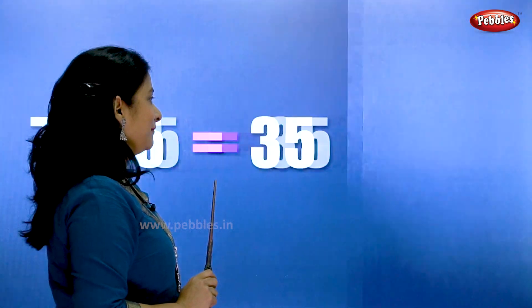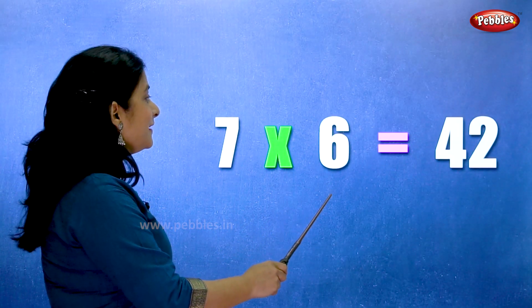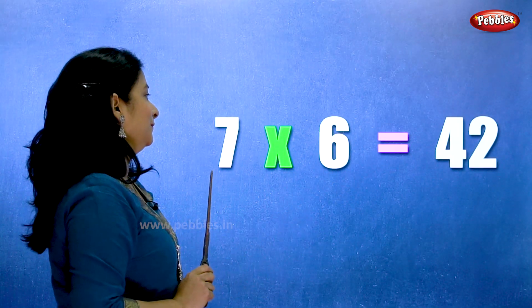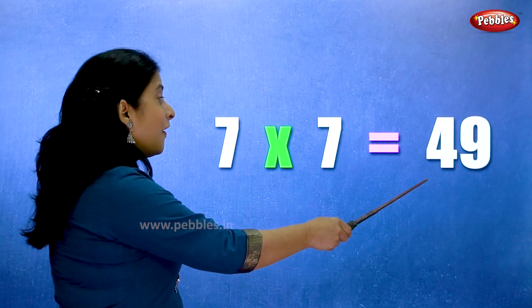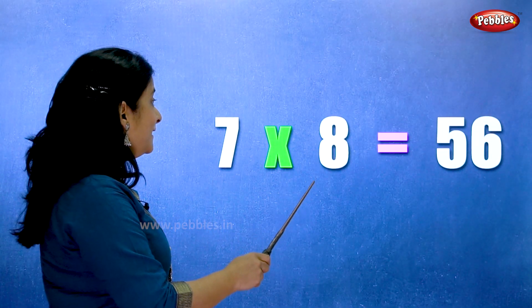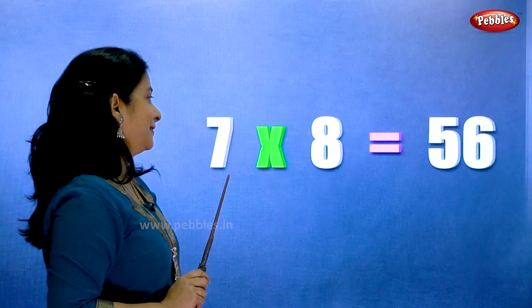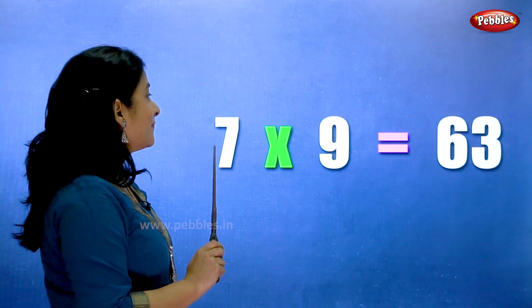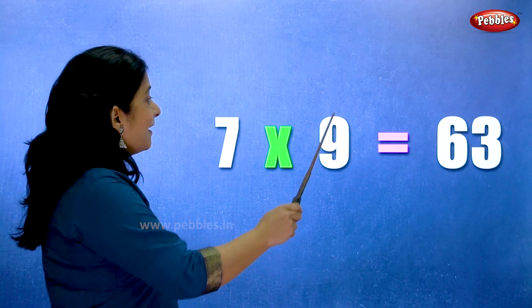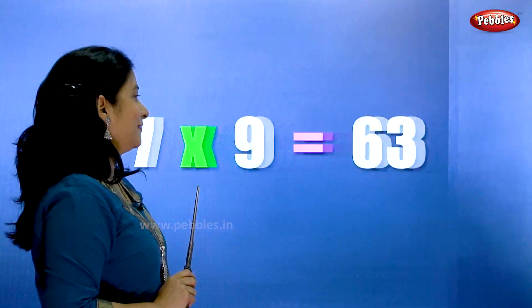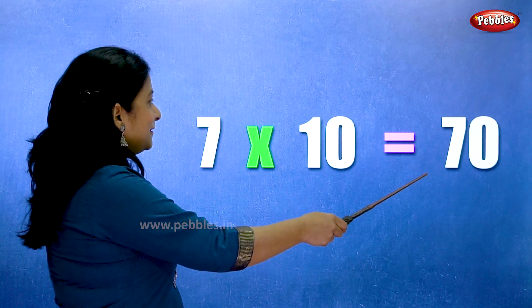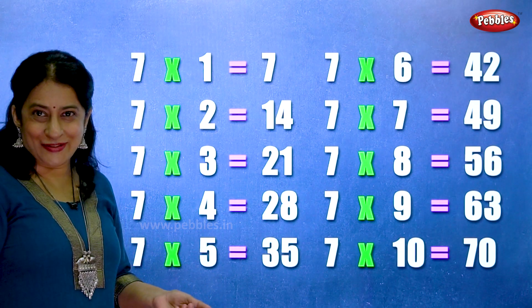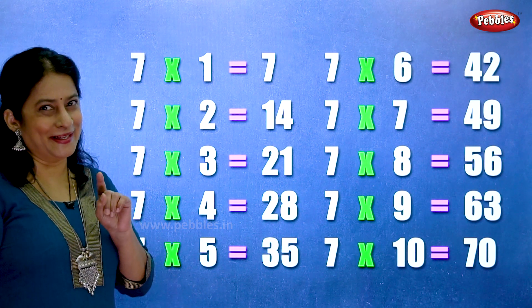7 sixes are 42. 7 sevens are 49. 7 eights are 56. 7 nines are 63. 7 tens are 70. Let's learn the table of 7 one more time.